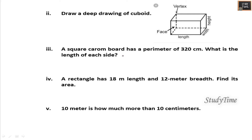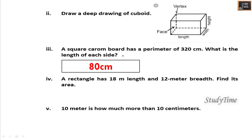A square carom board has a perimeter of 320 centimeters. What is the length of each side? 320 centimeters divided by 4 is 80 centimeters. That is the answer.